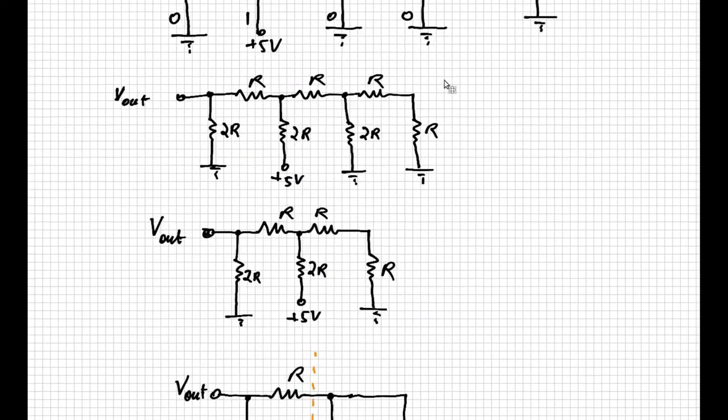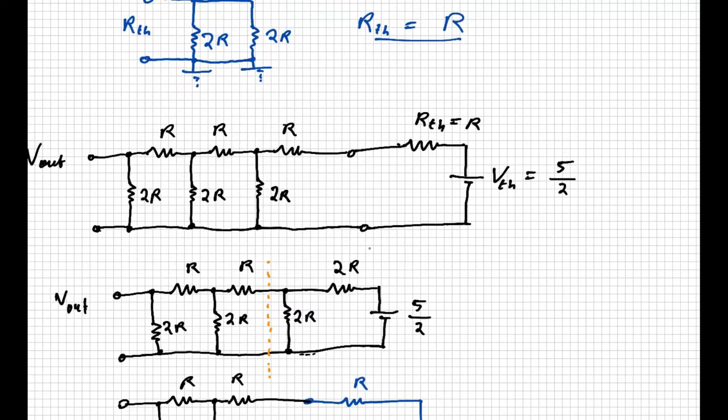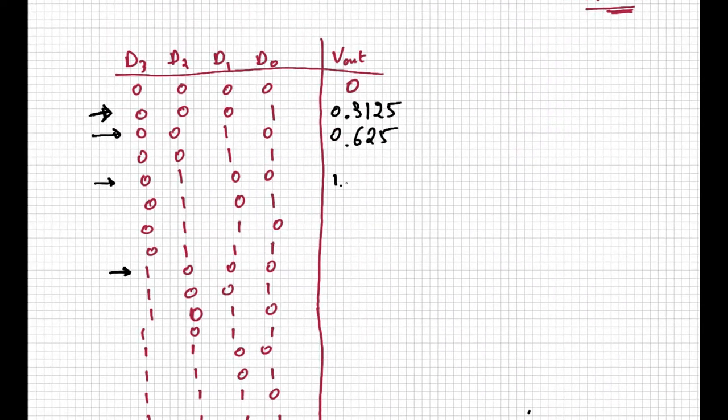We can now write this information on the table, and we can start working on the last of the combinations we selected, 1000, which we now know it is going to have a Vout of 5 over 2, or 2.5 volts.